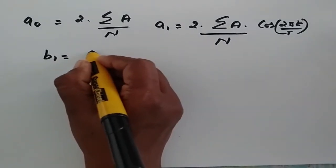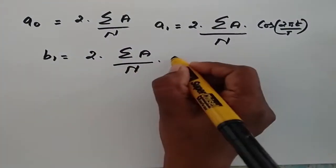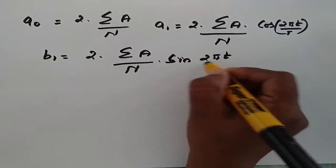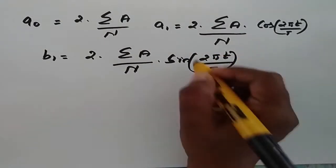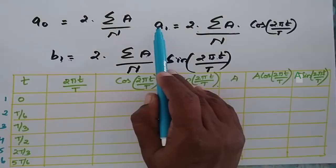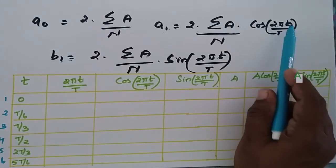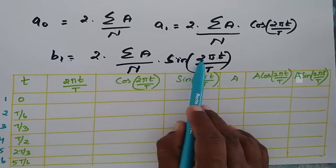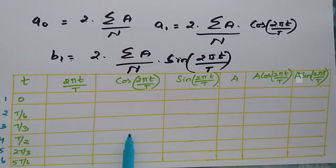Here b₁ is equal to (2/n) times summation of a·sin(2πt/T). We set up a tabular column where a₁ is equal to a·cos(2πt/T) and b₁ is equal to a·sin(2πt/T). This tabular column uses the t values for substitution.